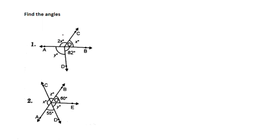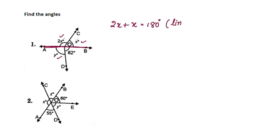First question: here is 2x, here is x, and here is y. This is a straight line. A straight line is 180 degrees — linear pair. So the angles on a straight line are 180 degrees. 2x plus x is equal to 180 degrees — this is a linear pair.